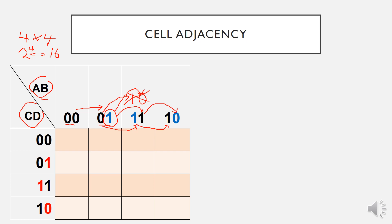Similarly for CD: from 0, 0 to 0, 1 only one variable changes; from 0, 1 to 1, 1 only one variable changes; and from 1, 1 to 1, 0 only one variable changes. This is how we label our K-Map. When we have the input combination A, B, C, D equal to 0, 0, 0, 0 and output F is 1, we write the output value 1 in the cell corresponding to 0, 0, 0, 0. This is one way of labeling our K-Map.